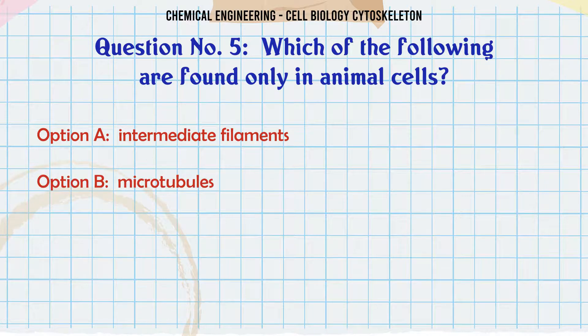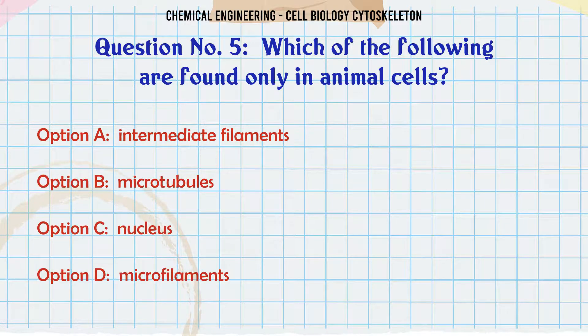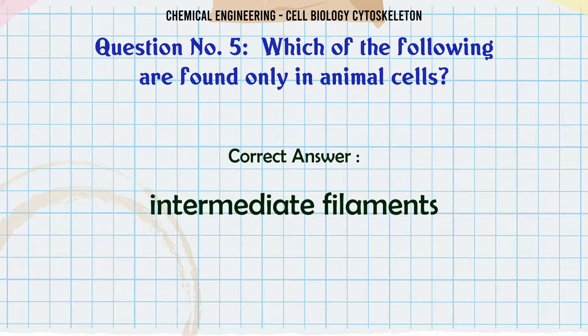Which of the following are found only in animal cells? A. Intermediate filaments, B. Microtubules, C. Nuclears, D. Microfilaments. The correct answer is Intermediate filaments.